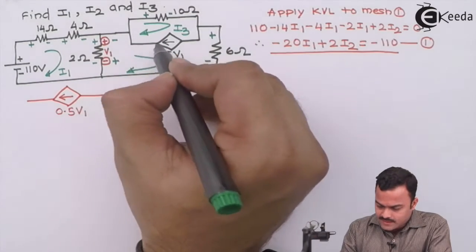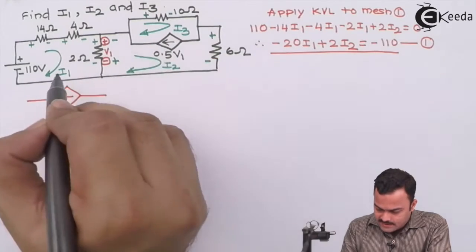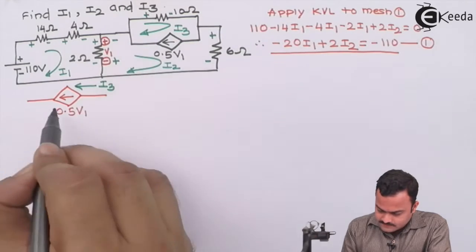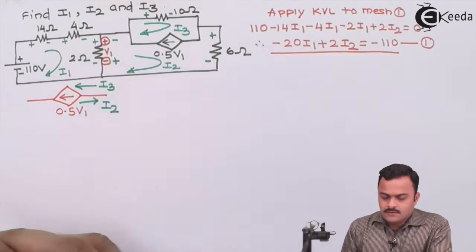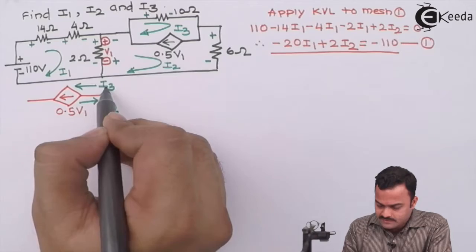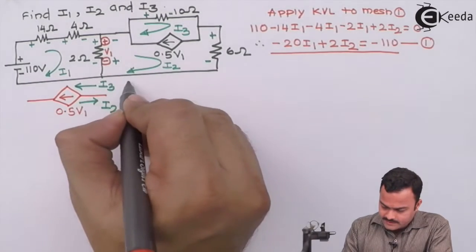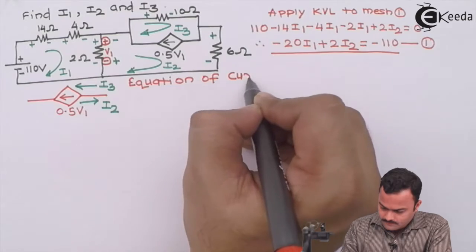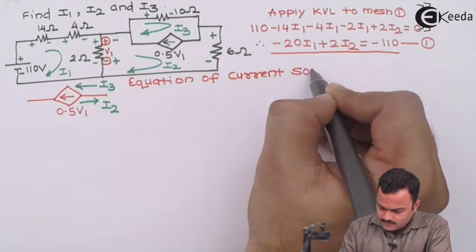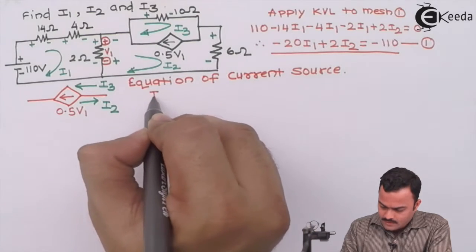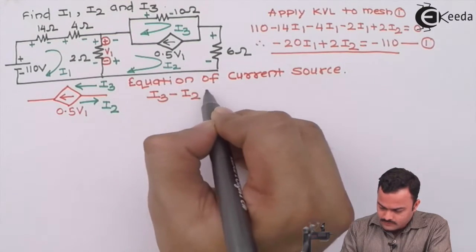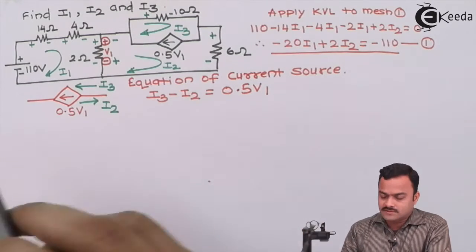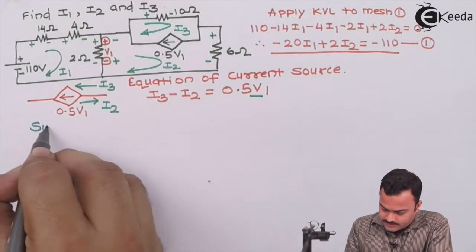This current source branch has two loop currents: i3 in one direction and i2 in the other. The given current direction is right to left, which matches i3. So we write the current source equation: i3 minus i2 equals 0.5v1. However, this introduces a new variable v1, which requires a substitution equation.